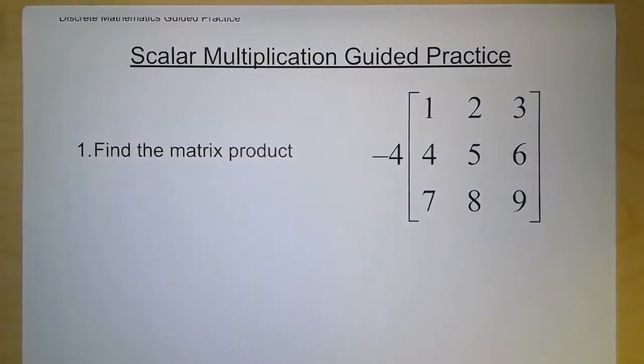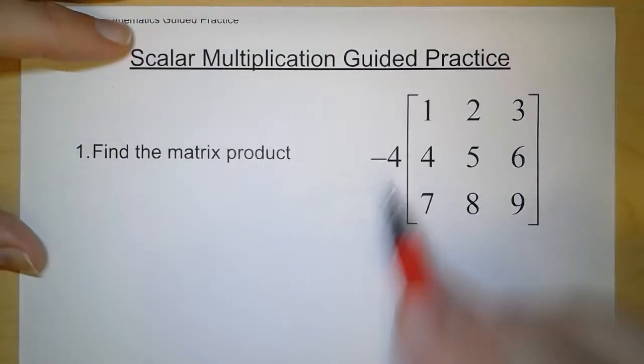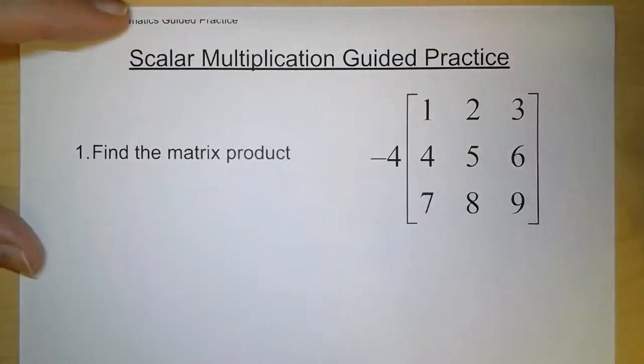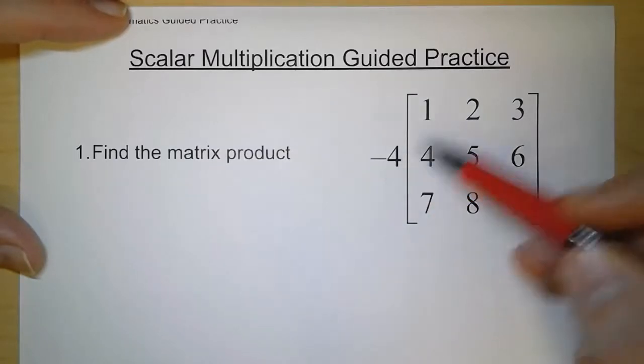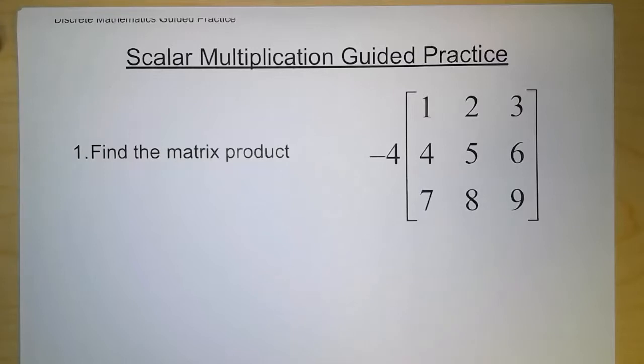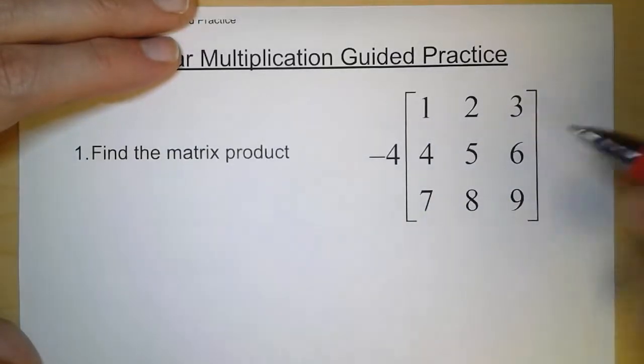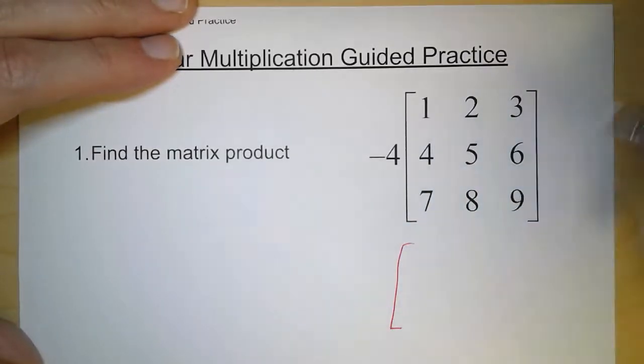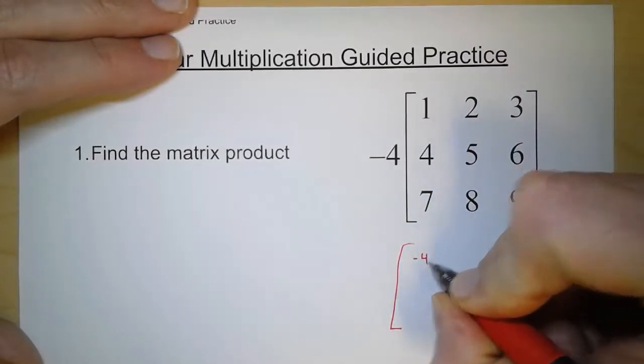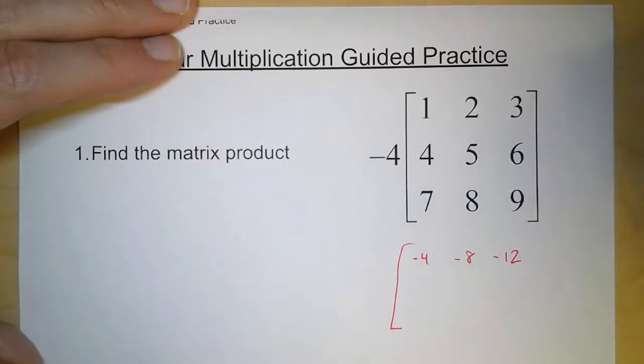Now, scalar multiplication just means that we're taking a matrix and multiplying it by a number. The way it works is, whatever number you're multiplying just gets multiplied by every individual number inside the matrix. So in this case, we're going to be multiplying negative 4 by the numbers 1 through 9. So that means we're going to have negative 4, negative 8, negative 12 in the first row.